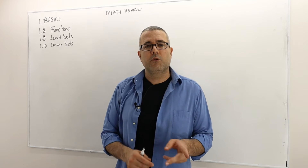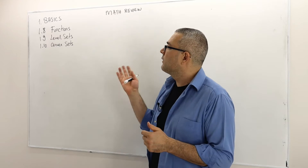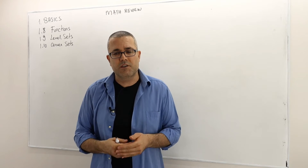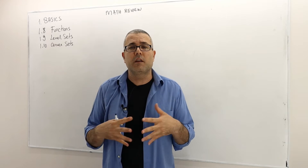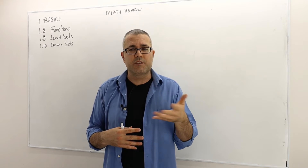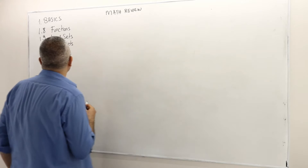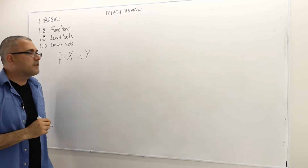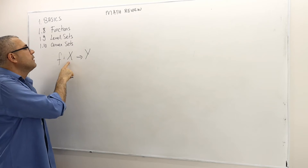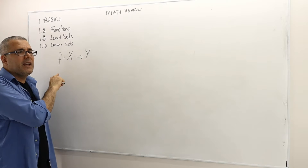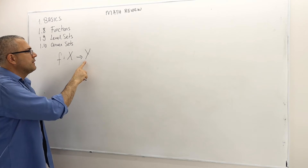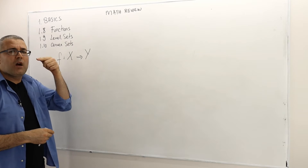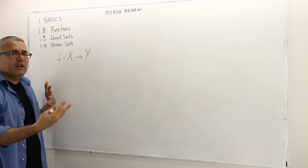Welcome back to our third part. In this part we are going to talk about functions, level sets, and convex sets. Functions are special binary relations. We normally define a function f from set X into Y, and it basically says for every point in X you have to map that X into a single element in Y — you relate every x to one y in the set Y.